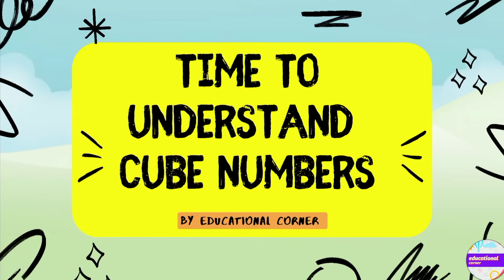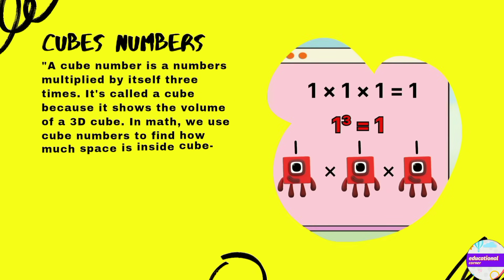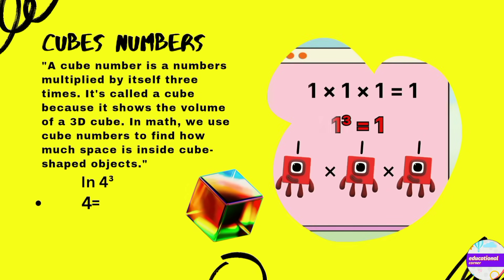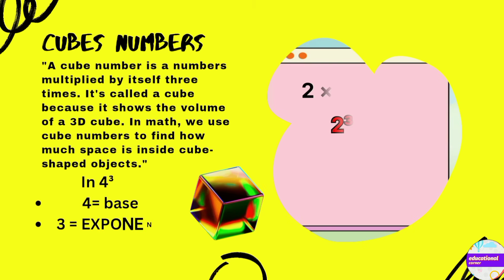Time to understand cube numbers. A cube number is a number multiplied by itself 3 times. It's called a cube because it shows the volume of a 3D cube.